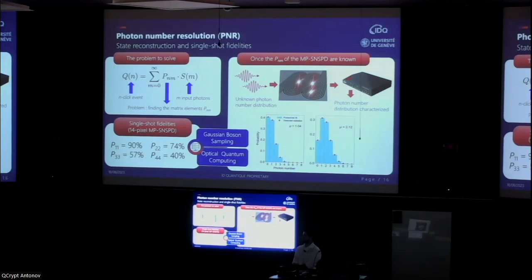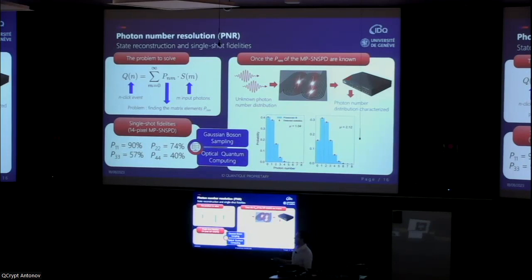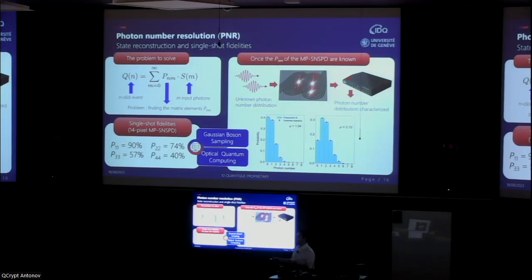Question: How large are the off-diagonal elements of the PNR matrix? Answer: Because dark counts are below 100 counts per second, elements below the diagonal are assumed zero — you won't get more clicks than photons sent. Each column sums to one. For example, for the two-photon fidelity of 74 percent, the remaining probability is distributed between getting only one click — mistaking two photons for one — or missing both, since the total detection efficiency is 90 percent, leaving a non-zero probability of missing both photons.